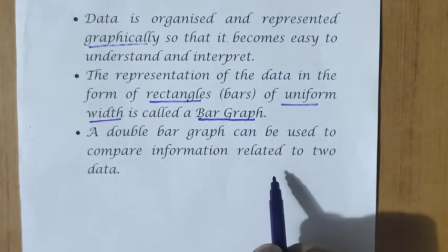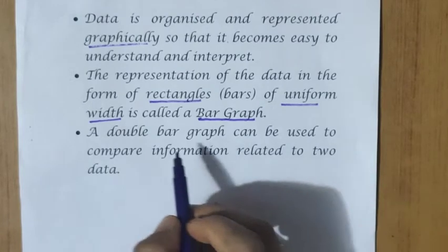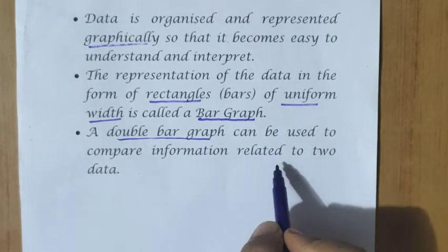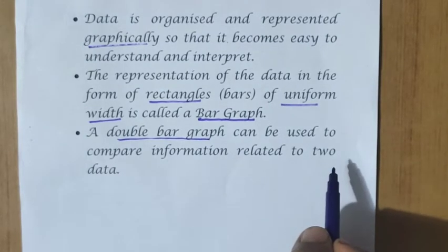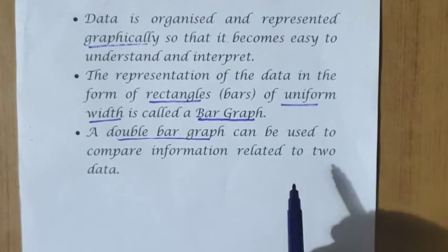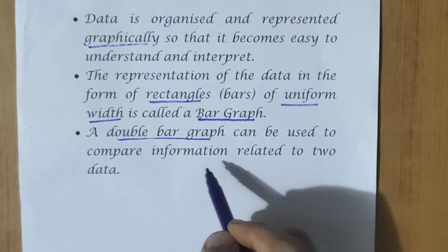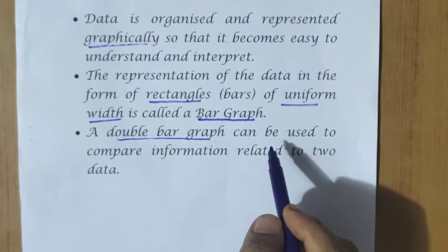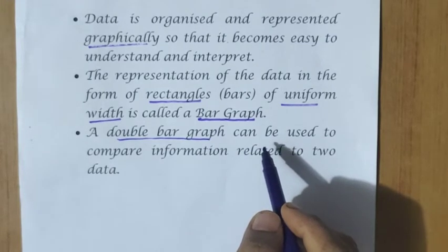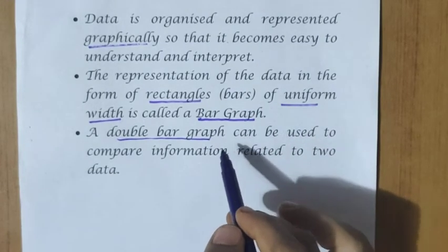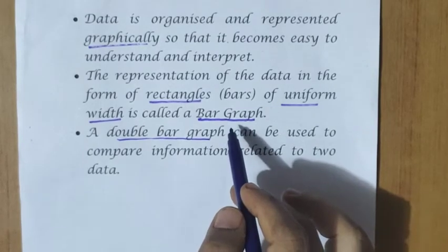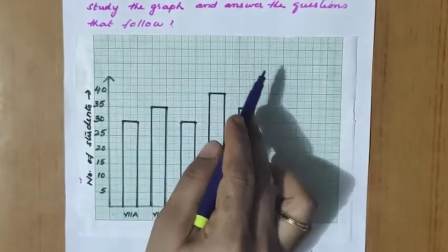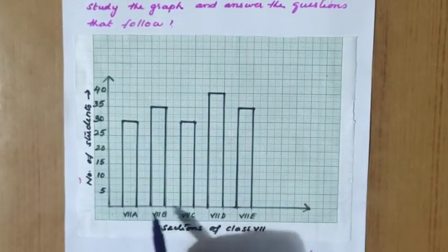A double bar graph can be used to compare information related to two data sets. The advantage of a double bar graph is that we can compare two data sets and draw both graphs on the same page. So there are two types of graphs to study: the bar graph and the double bar graph.